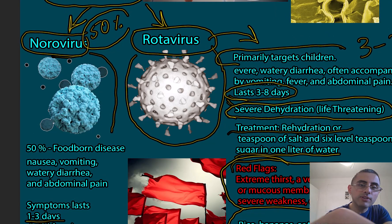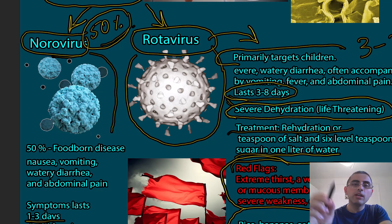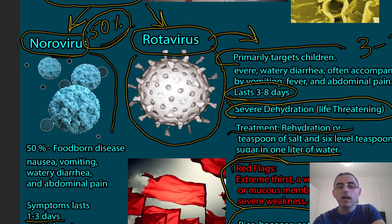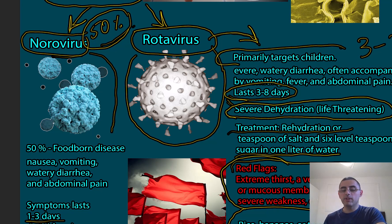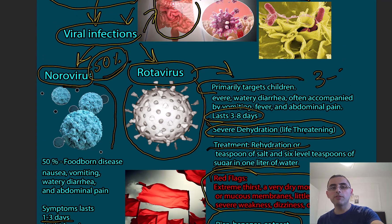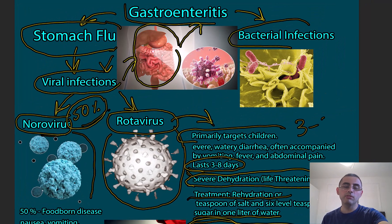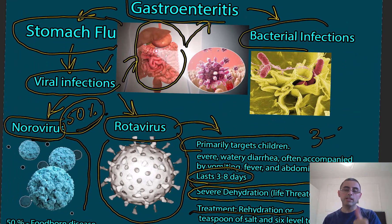To summarize: if there is food poisoning in adults, almost 50% probability points to norovirus. In children with severe diarrhea, the highest probability is rotavirus, especially when the child is not vaccinated. Thank you for watching — if you like my videos, please give a thumbs up, and if you like my channel, please subscribe.